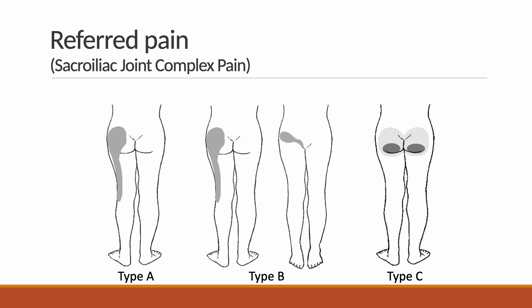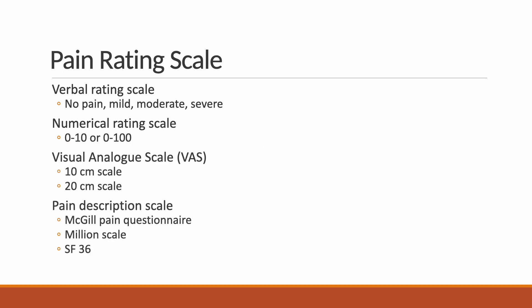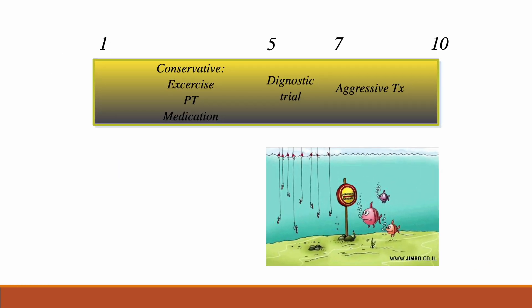Most deep somatic structures have a specific referred pain pattern. The pain rating scale is not only used for academic purposes but is also a handy tool to determine treatment strategy. I usually use a visual analog scale (VAS). My main target for interventional treatment is VAS 5 to 7. I must study aggressively if patients express more than VAS 8, and I do not apply injection treatment if the VAS score is less than 5, because patients feel more uncomfortable with needling at lower VAS ranges.